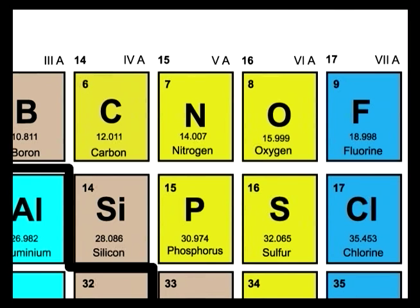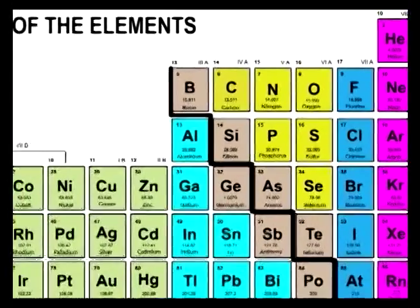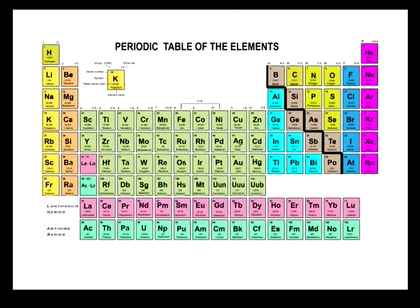Some periodic tables are more elaborate — your book might have the name spelled out, or even list boiling point and melting point. But for a chemistry class, the atomic number, atomic mass, and symbol are really the most important things. If you zoom out and look at the whole Periodic Table, it has a kind of weird-looking shape — jagged edges, holes in it — not the nice rectangular shape you might expect.